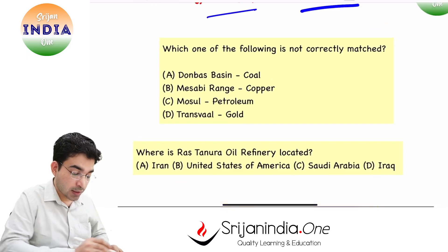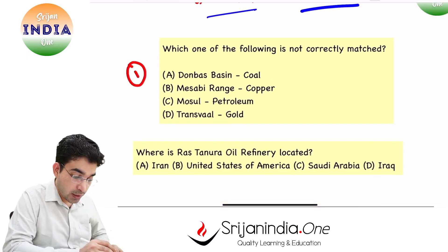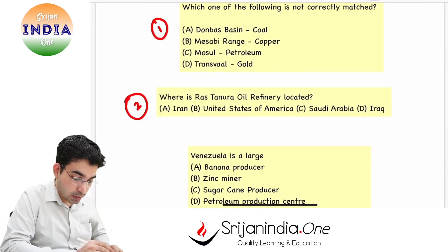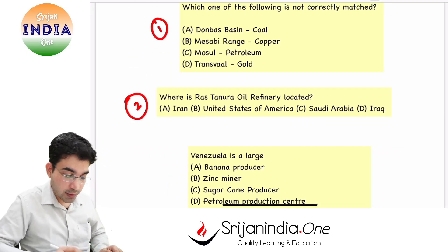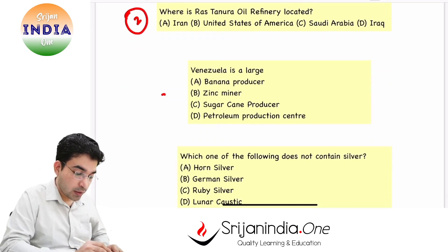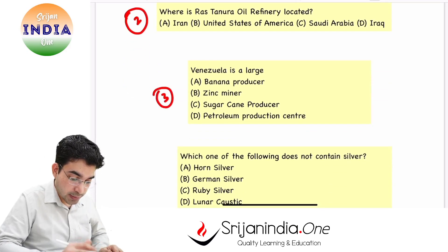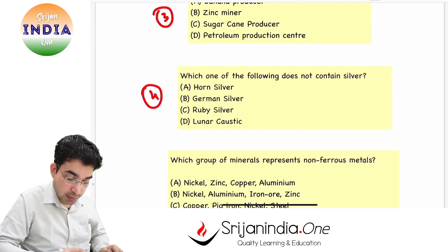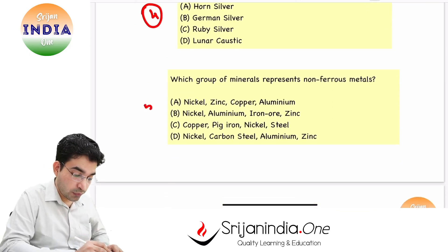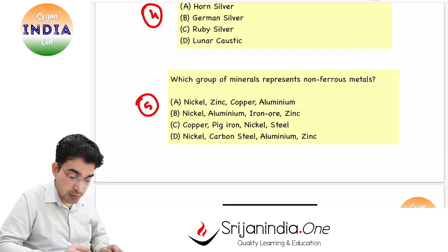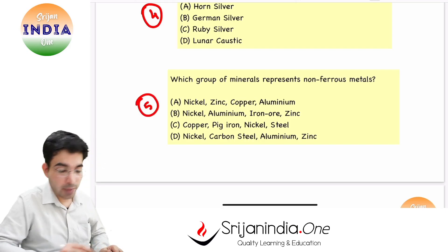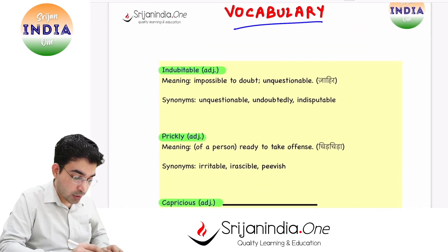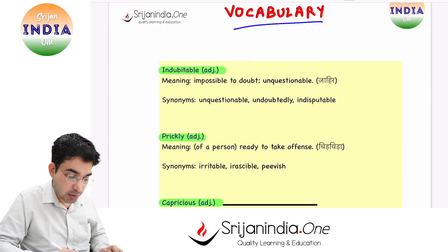Aaj ke sawaal: pahla sawaal — which one of the following is not correctly matched? Second question — Ras Tanura oil refinery is located where? Third question — Venezuela kis baat ke liye famous hai? Fourth question — which one of the following does not contain silver? Fifth question — which group of minerals represents non-ferrous metals? So these are five questions for today.